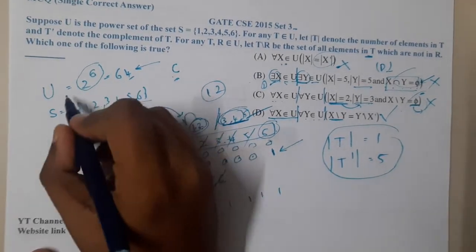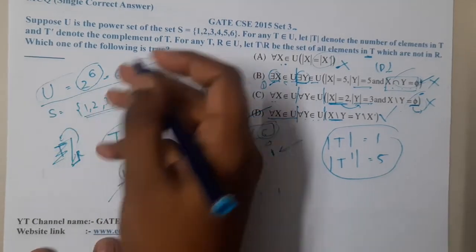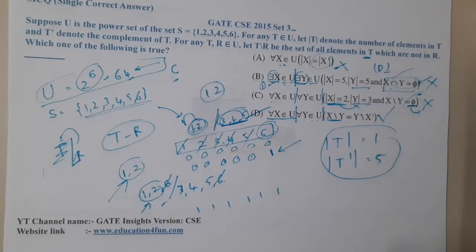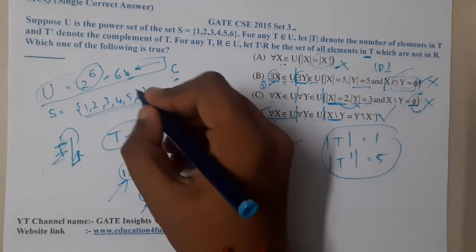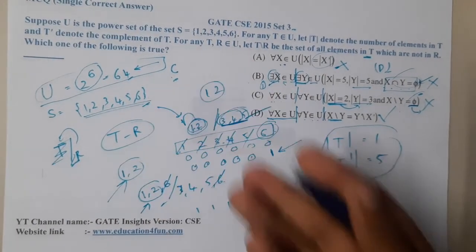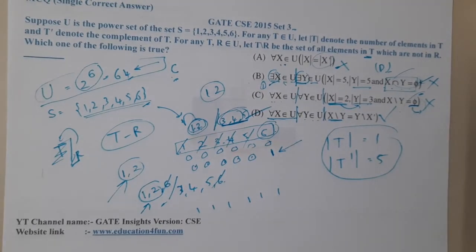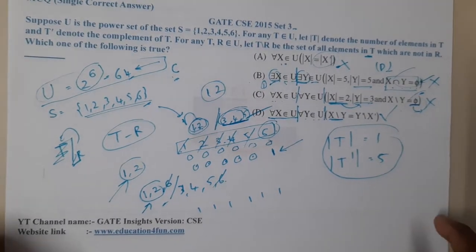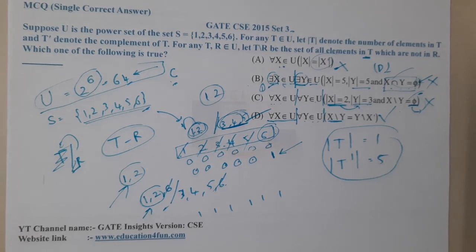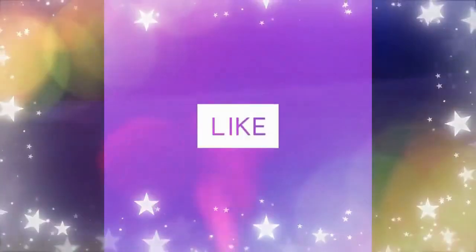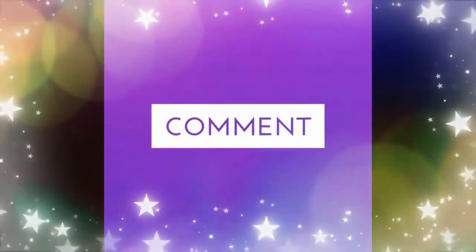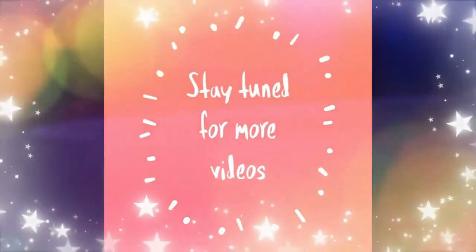I chose a smaller set to keep the analysis simple rather than working through all 64 subsets — any set would give the same result. The answer is Option D. In the next lecture we will continue with the next question. Thanks for watching — like, share, and subscribe for more videos!